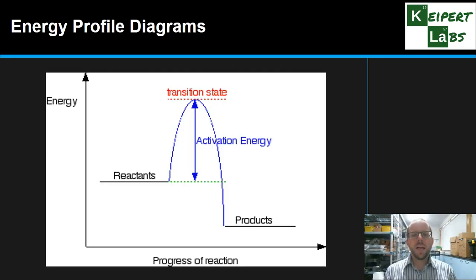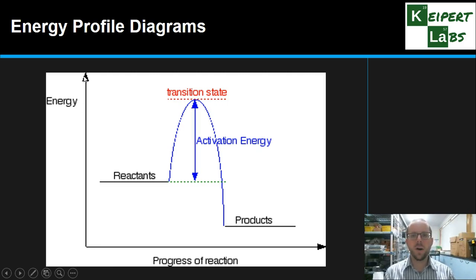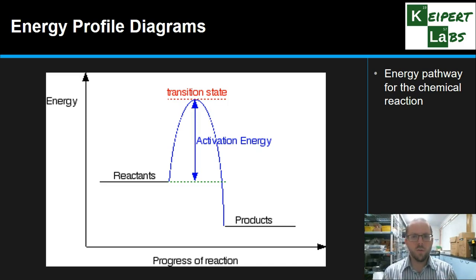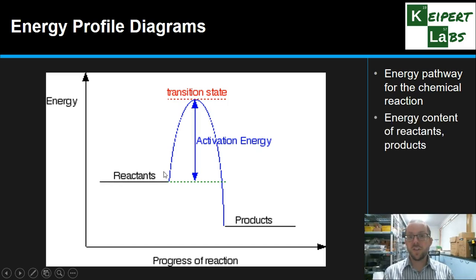So what do we mean by energy profile diagram? Well, it looks a little something like this. It's a graph of the progress of reaction, or time, on the bottom axis and energy up the side. We're going from a low energy state all the way up to a high energy state. Essentially, it represents an energy pathway for a chemical reaction to occur — we're talking about a chemical change process, not physical changes like melting or boiling. We see that we have a line or a point representing the reactants and their energy content, called enthalpy.